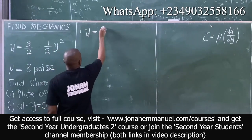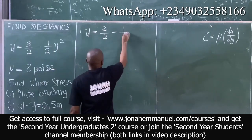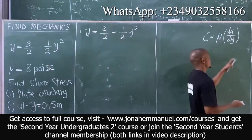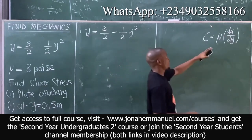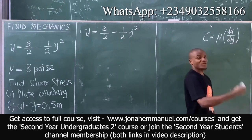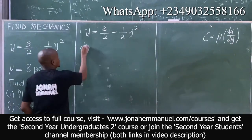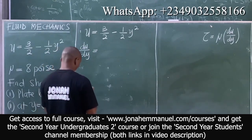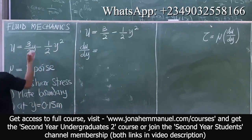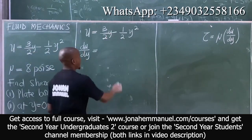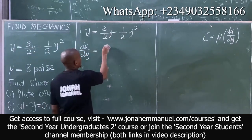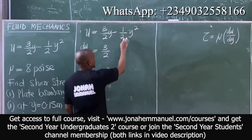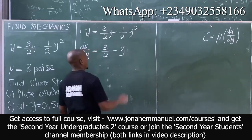To get the expression for velocity gradient, I will have to differentiate. From this, if I differentiate, I will have that dU over dY. There should be a Y here — it's supposed to be a Y here in the equation. So if I differentiate 3 over 2 Y, it gives you 3 over 2. Then if I differentiate minus 1 over 2 Y squared, the 2 comes down, giving minus Y.